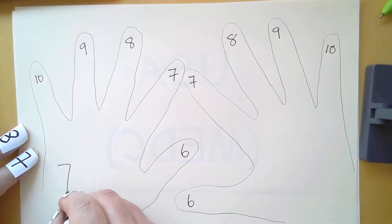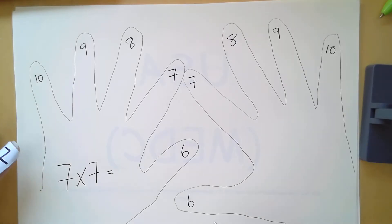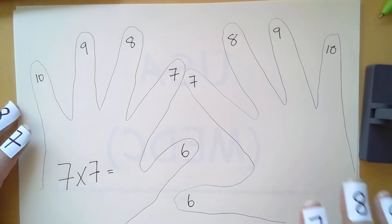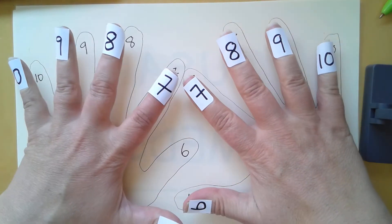We are going to start by learning seven multiplied by seven. Some of you possibly already know it's 49, and we're going to demonstrate how that works.